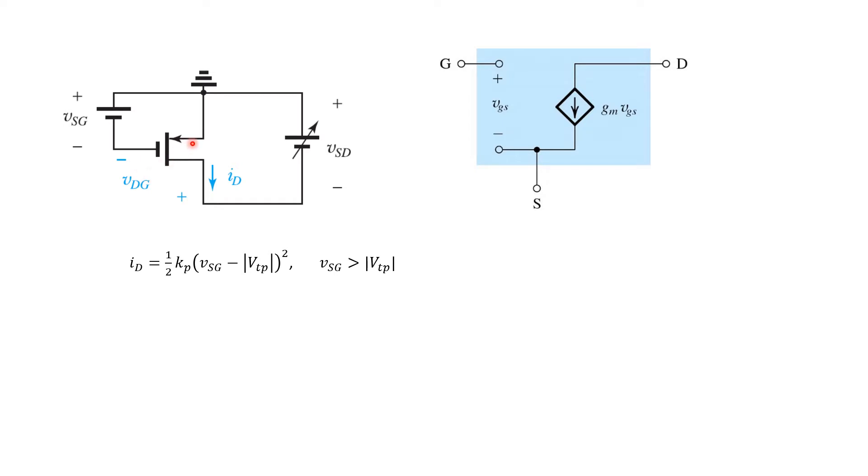The source of the PMOS transistor is usually drawn at the top of the schematic, and this is done for a good reason. That's because in normal operation, the source is at a higher voltage, and we tend to put higher voltages towards the top of the page in schematics. So to help us line this up with the small signal model shown on the right, let's flip it around a bit.